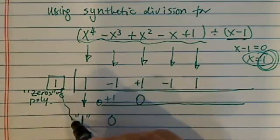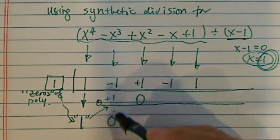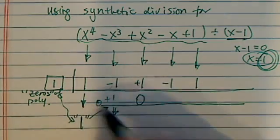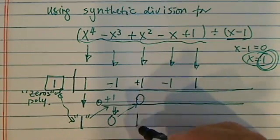So this times this, I'm going to put it here. Then add those two, I'm going to come down here. And then this 1 times 0, I'm going to put it back up there again. 1 plus 0 is 1.